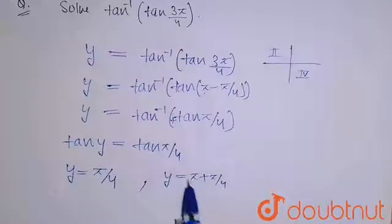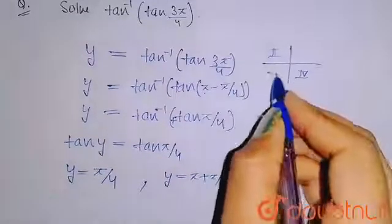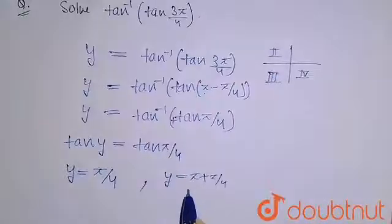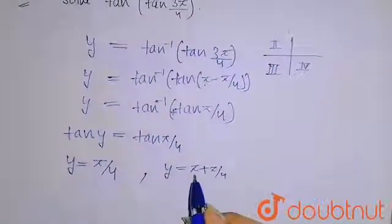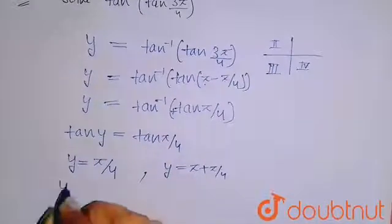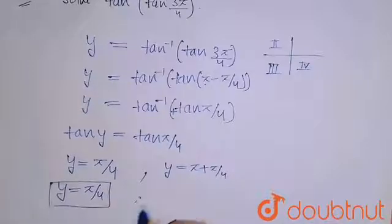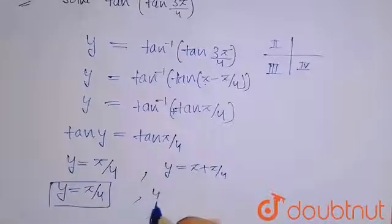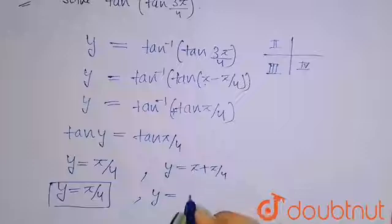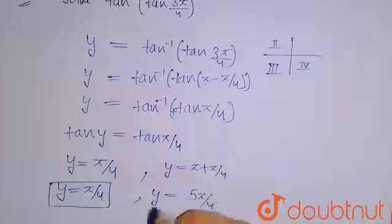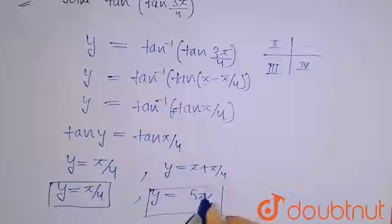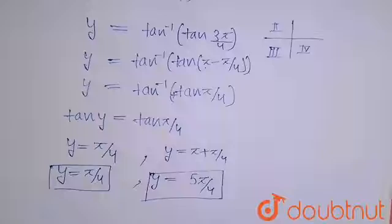In the third quadrant, I am writing that the value is π plus π by 4. So your one value is y equals π by 4, and your other value is y equals π plus π by 4, which means 5π by 4. So this will be my solution for this question. I hope you understand.